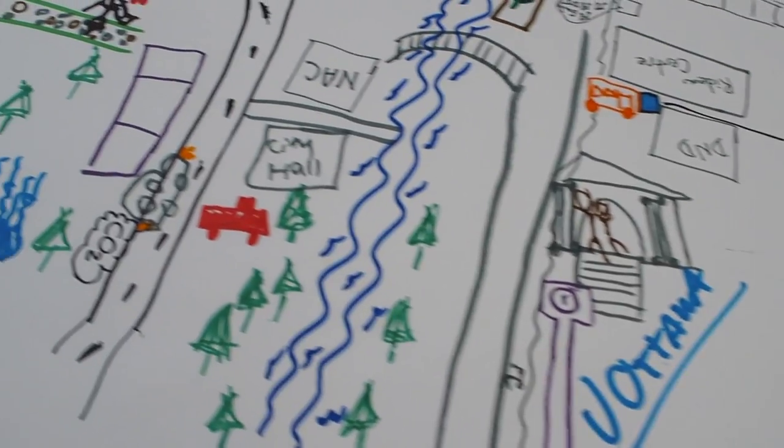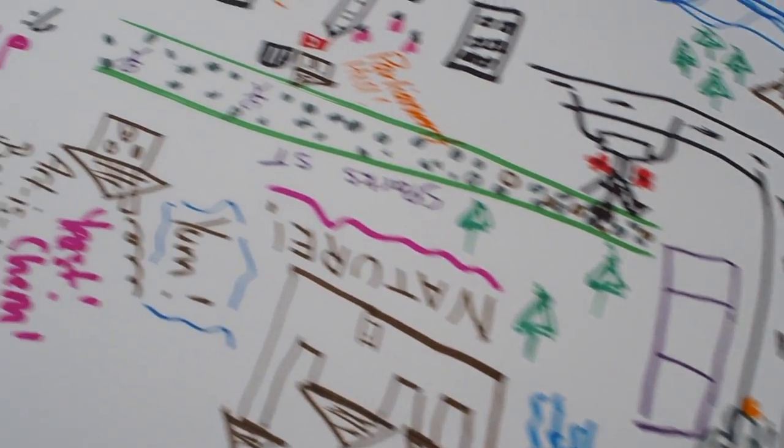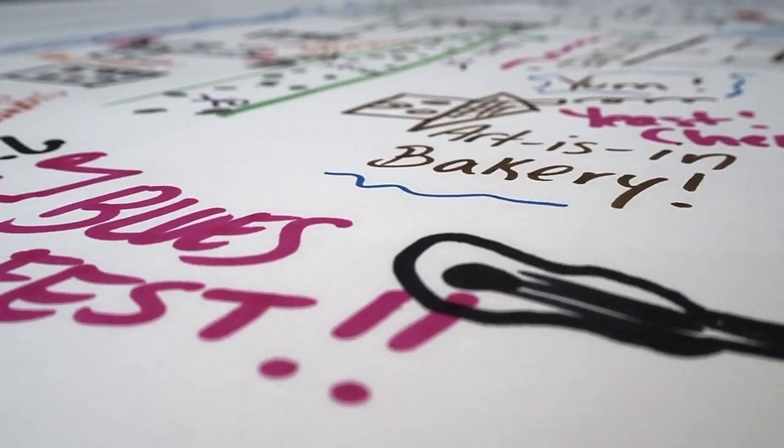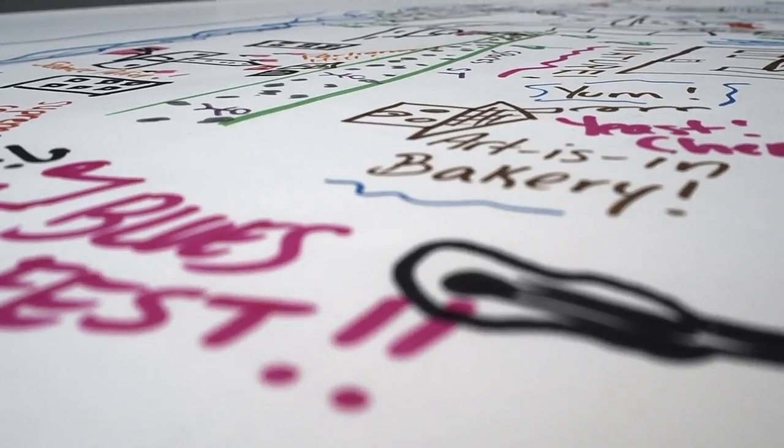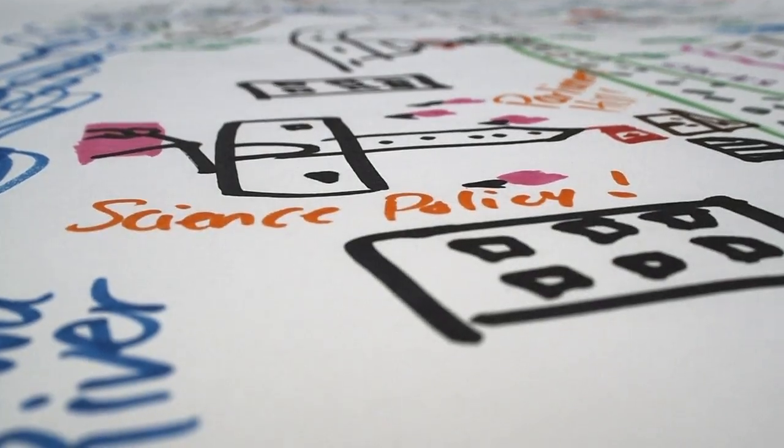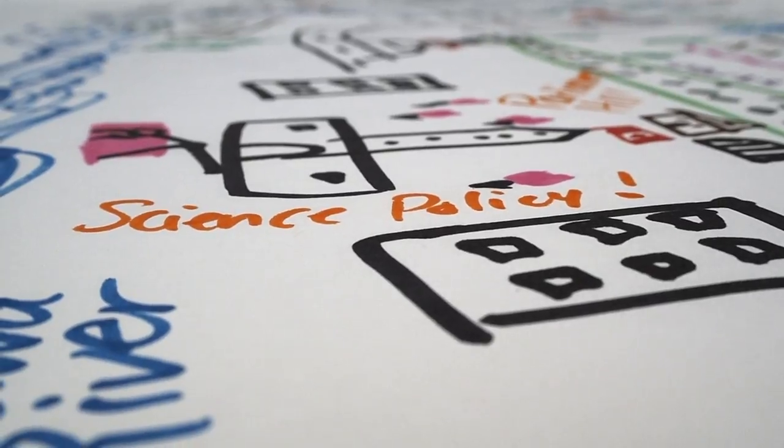Once your community map is complete, you're ready to move on to the final step of this activity. In Community Mapping 3.0, we turn our attention from what is currently around us in our community to what we would like to see in the future.